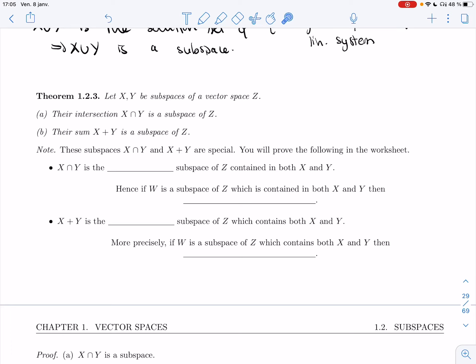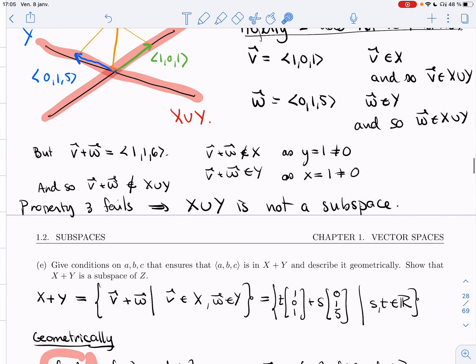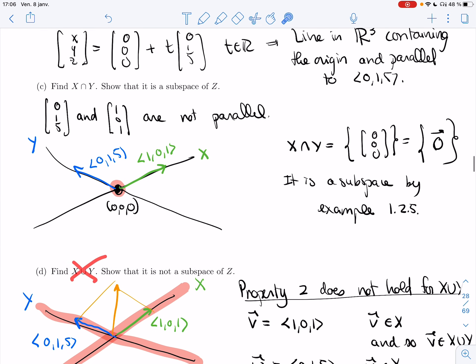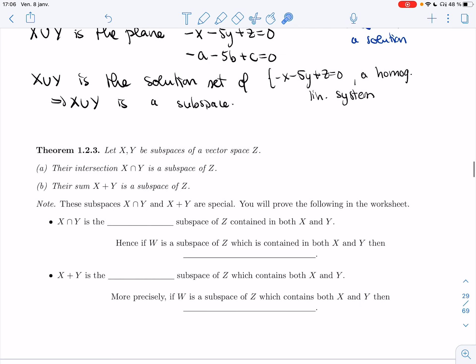All right, welcome back. In this video, we'll talk about Theorem 1.2.3. This has to do with the examples we just did where we found that the sum is actually a subspace, that the union isn't, and that the intersection is a subspace. We'll prove that in this theorem.